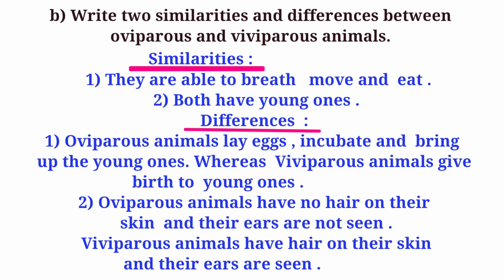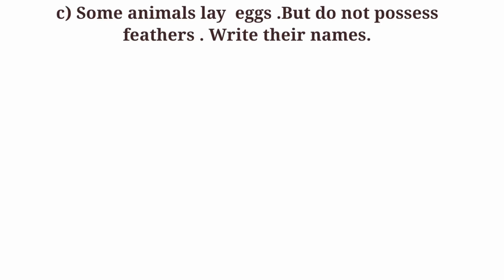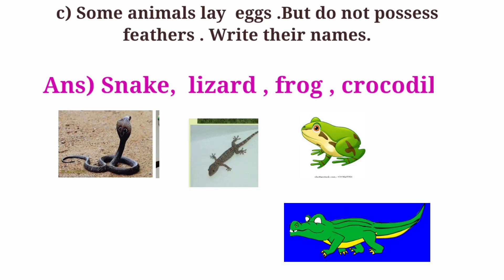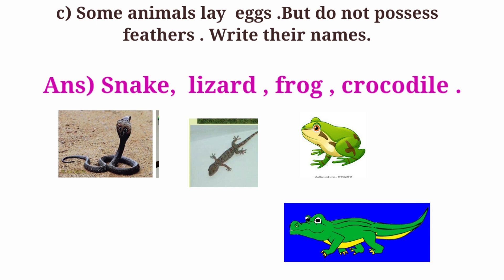Oviparous animals have no hair on their skin and their ears are not seen. Viviparous animals have hair on their skin and their ears are seen. Question C: Some animals lay eggs but do not possess feathers. Write their names. Answer: Snake, Lizard, Frog, Crocodile.